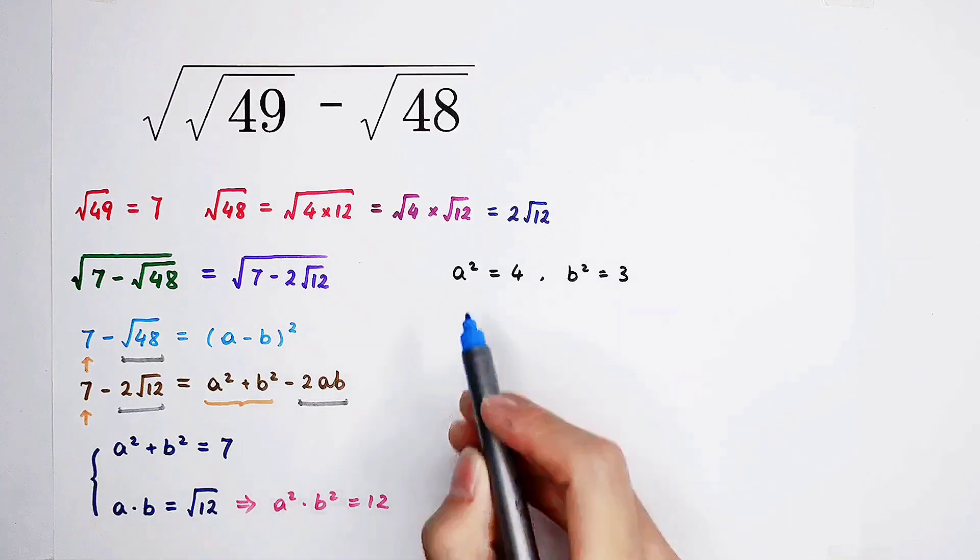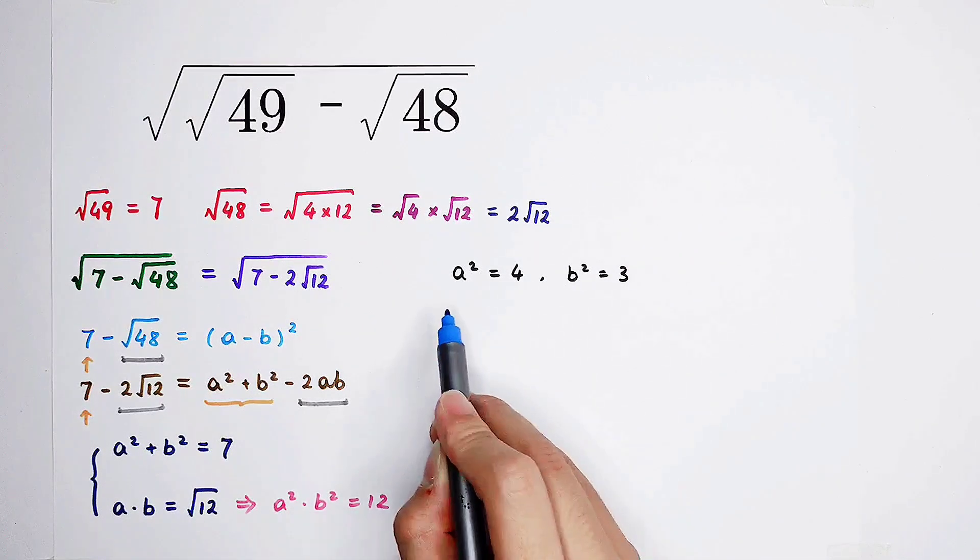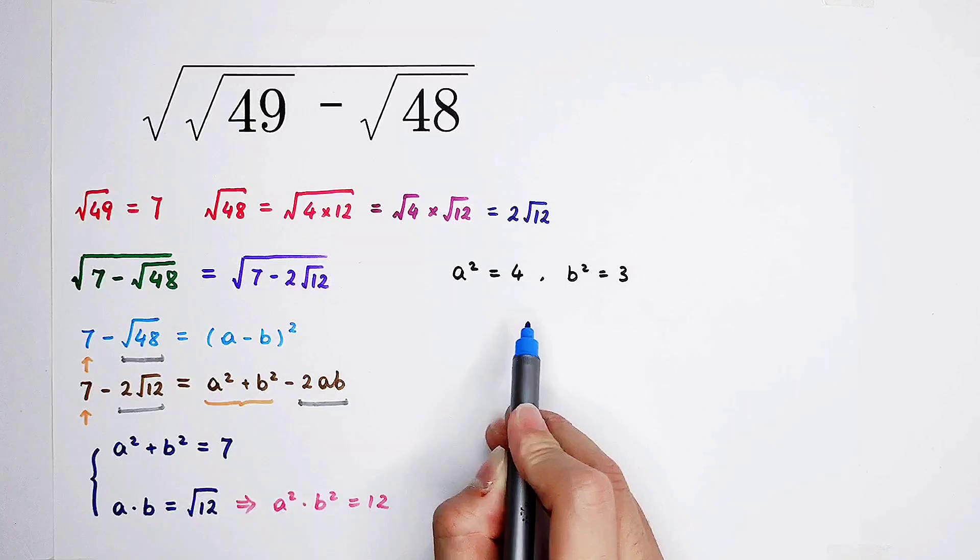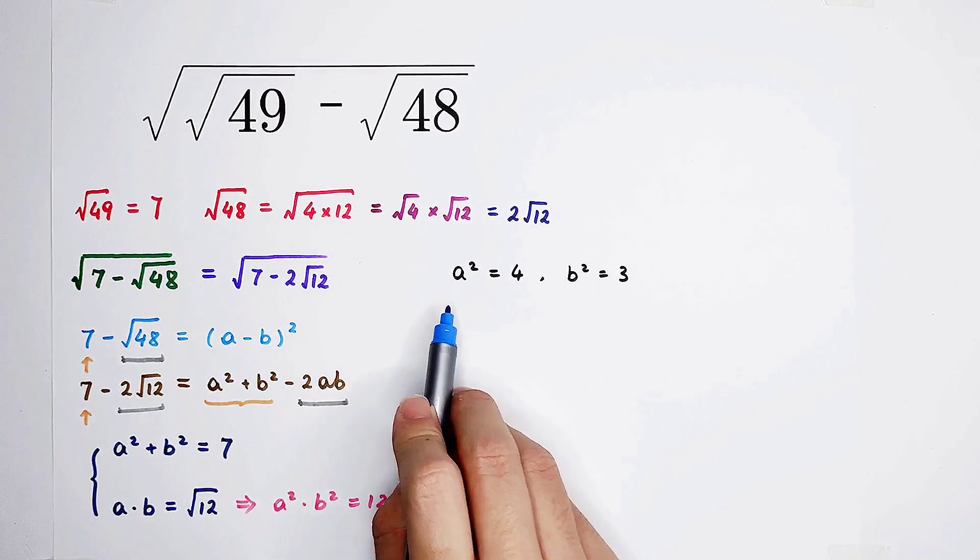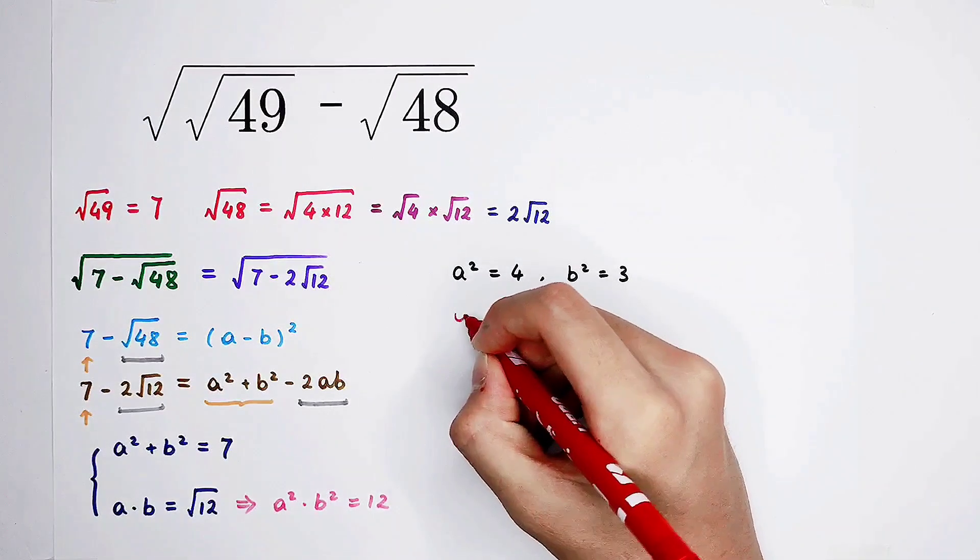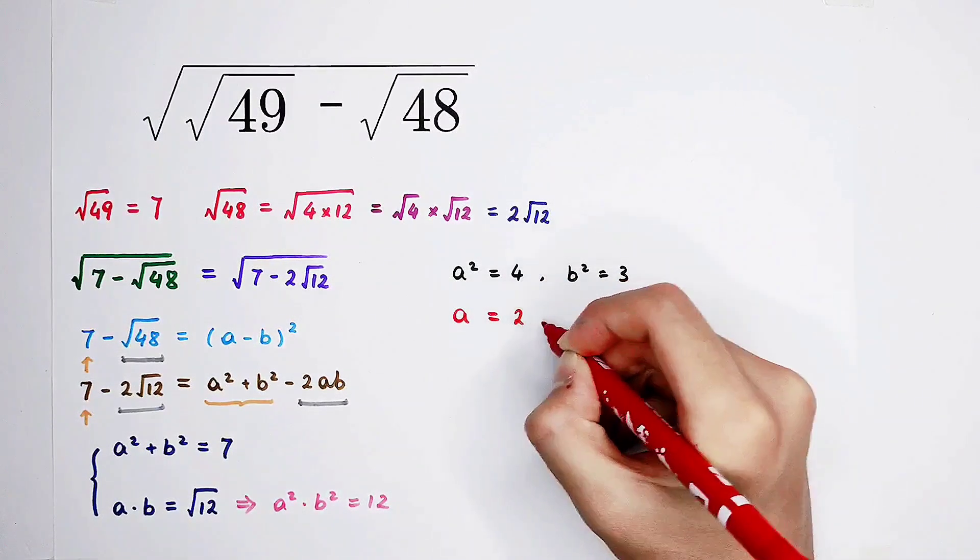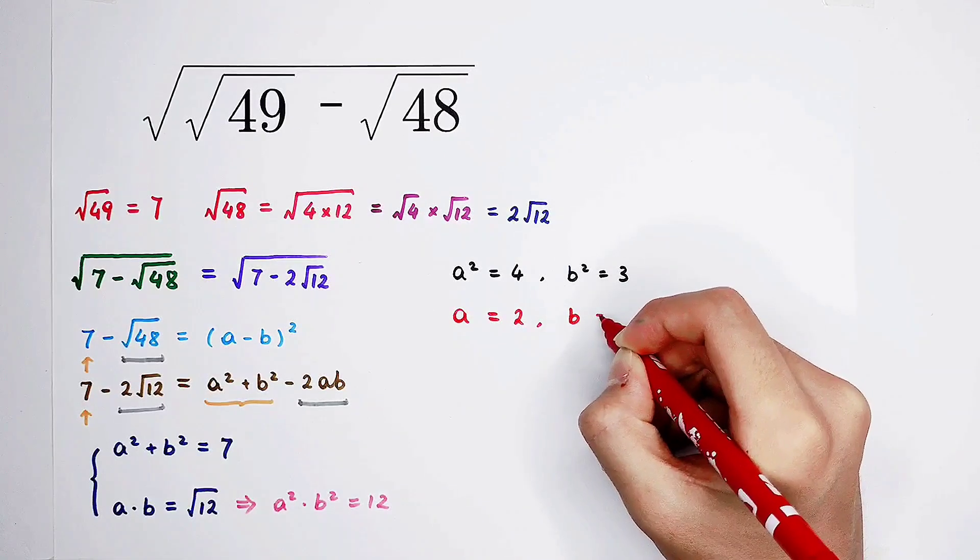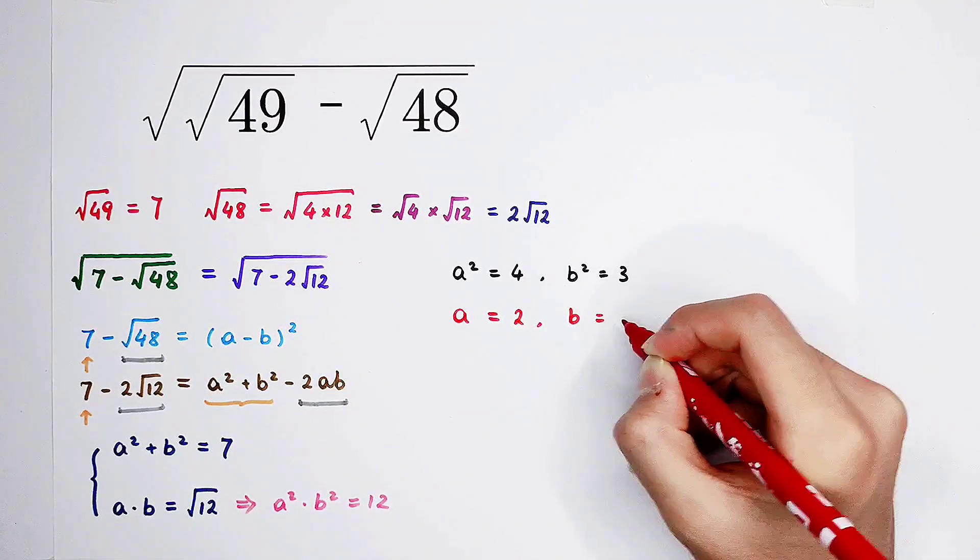If we are only gonna solve this equation, then a should be positive or negative 2. But we only have to solve for positive a. So here, a should be equal to 2. That's enough. For b, the same rule. b is square root of 3.